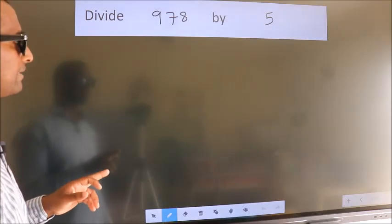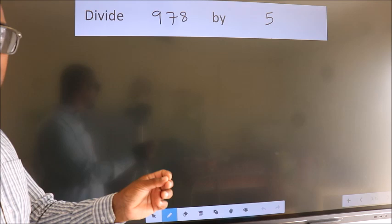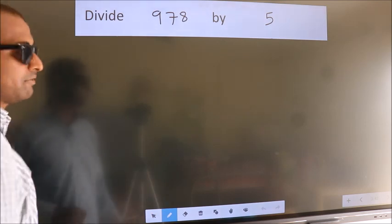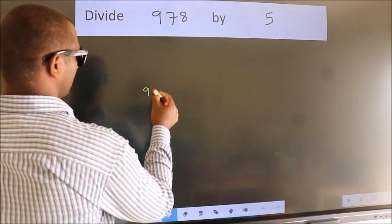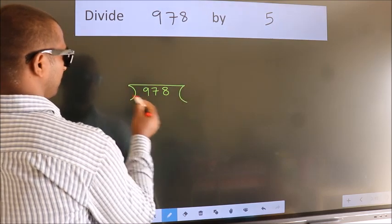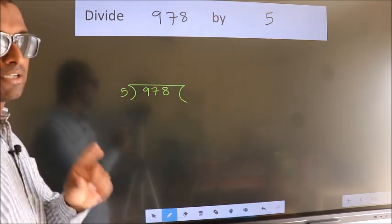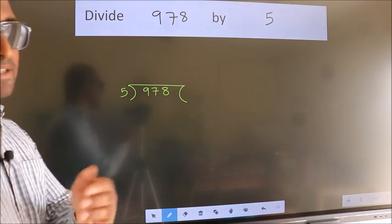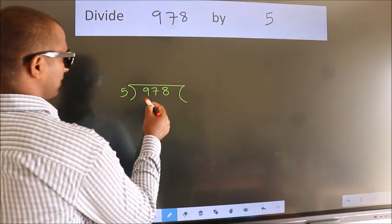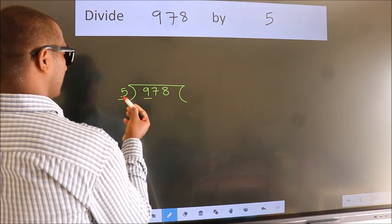To divide 978 by 5, we should frame it in this way: 978 here, 5 here. This is step 1. Next, we have 9. A number close to 9 in the 5 table...